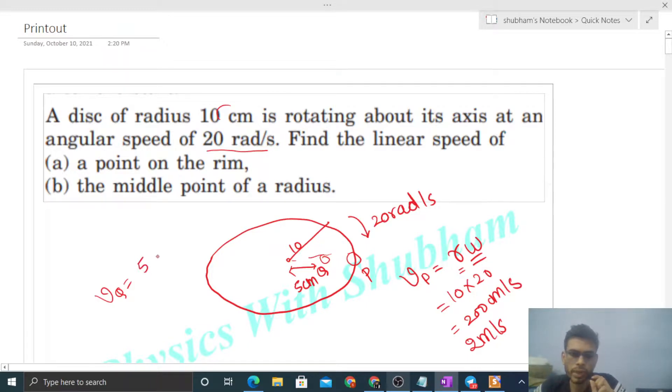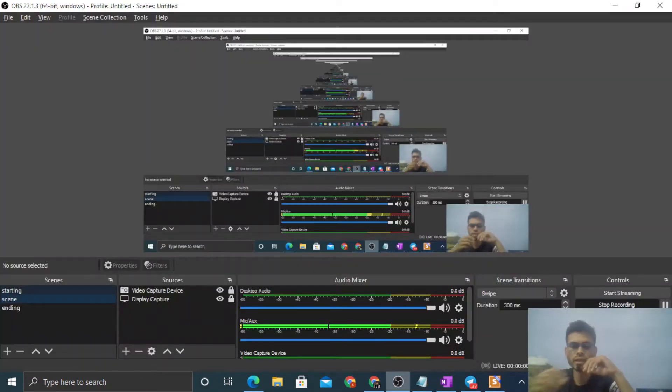And omega will be again 20. So it's coming out to be hundred centimeter per second or you can take it to be 1 meter per second. So I think you have understood. Let me know if you still have any confusion, we can discuss further. Okay guys, keep working hard, best of luck, bye.